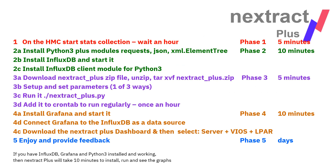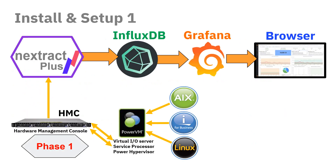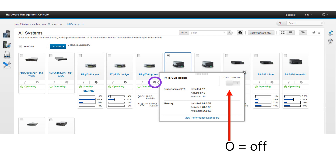All the details are in that main article where you download the code. So phase one: HMCs — we've got to switch on the data collection. By default it's switched off. You may have put it on for other reasons, but we definitely want to make sure it's on now for the servers you want to manage the performance. I recommend you start off with half a dozen or so, and then once you've got the graphs working, maybe switch them on for all the others too.